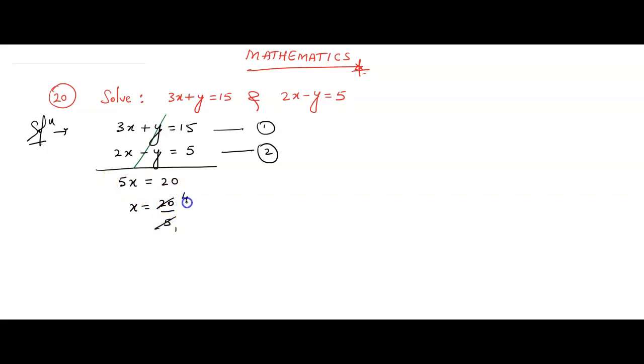Then the value of x is 20 by 5. 5 will cross multiply down. So the value of x is plus 4, right?